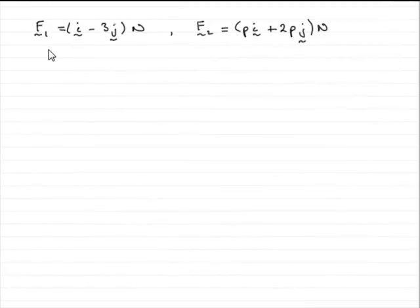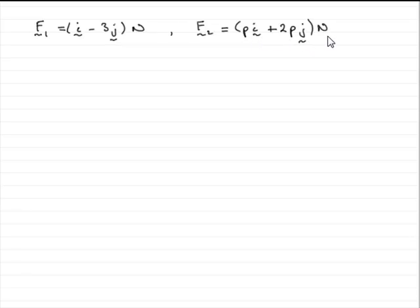In this question we're given that two forces F1 and F2, where F1 equals i minus 3j Newtons and F2 equals pi plus 2pj Newtons. In the first part of the question we've got to find out the angle between F2 and the vector j.